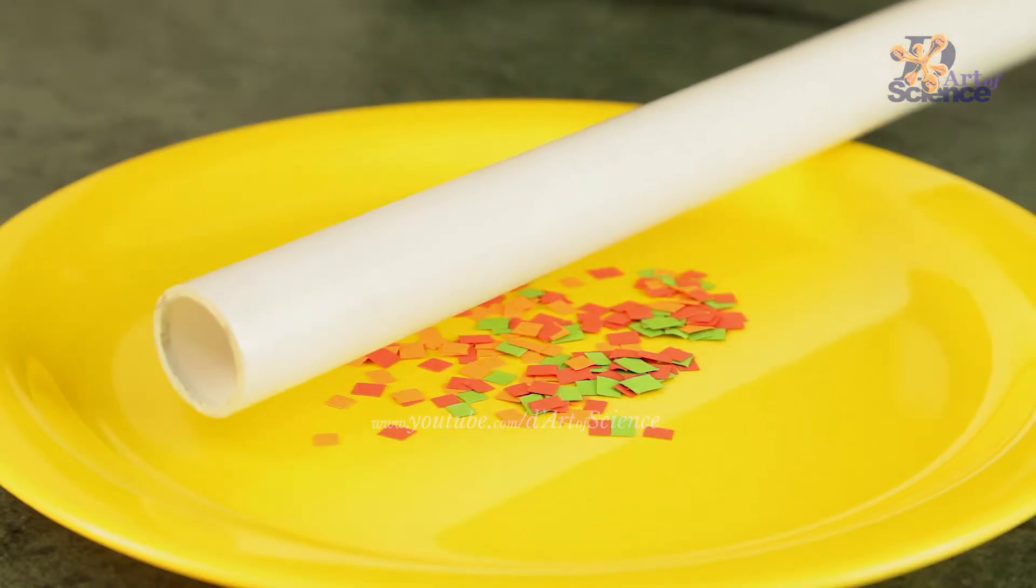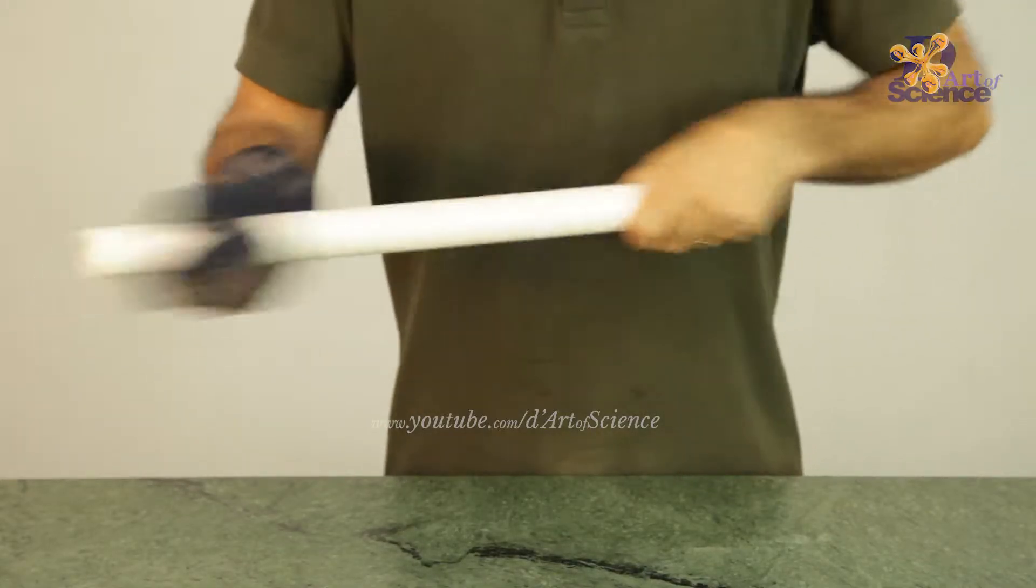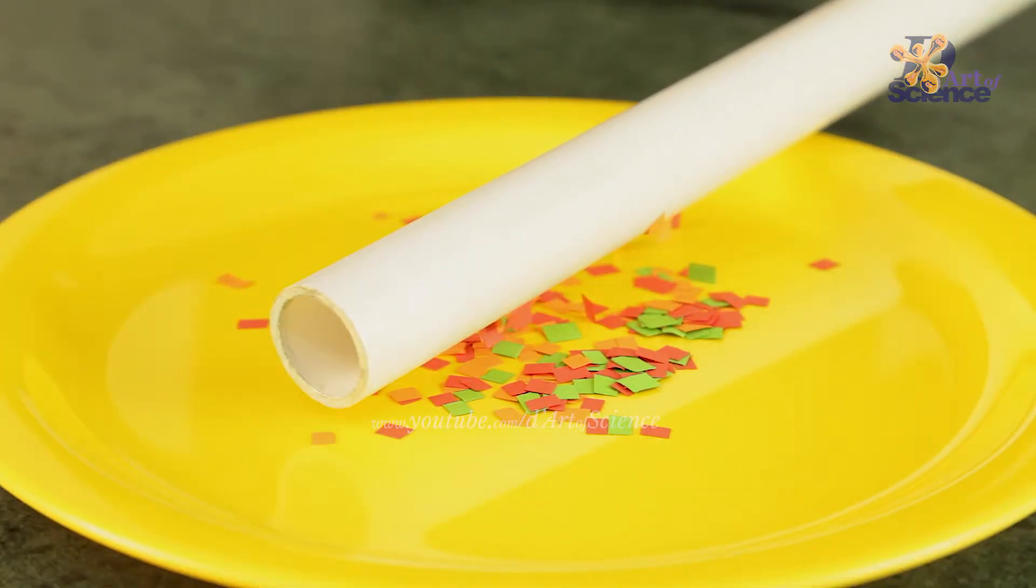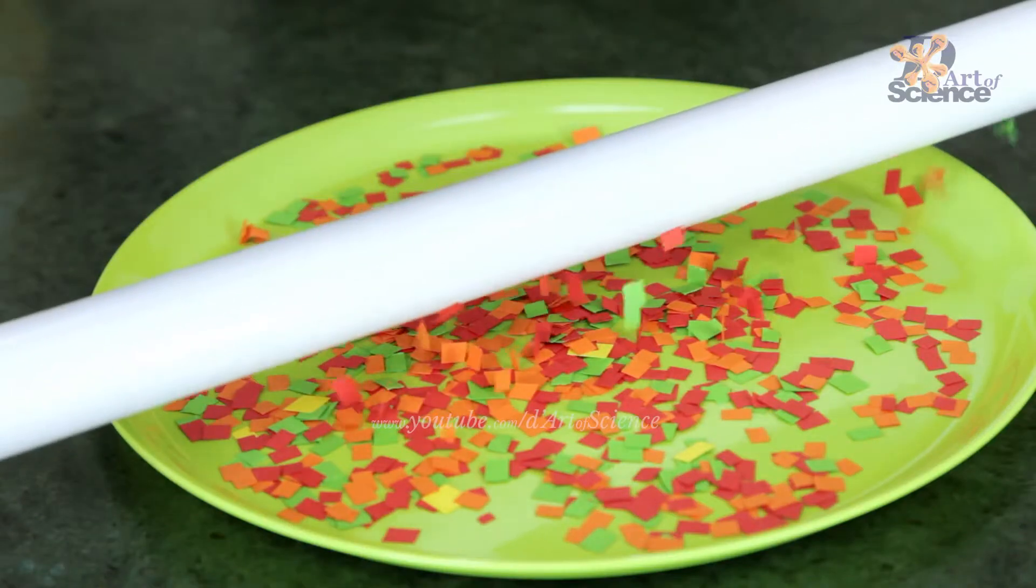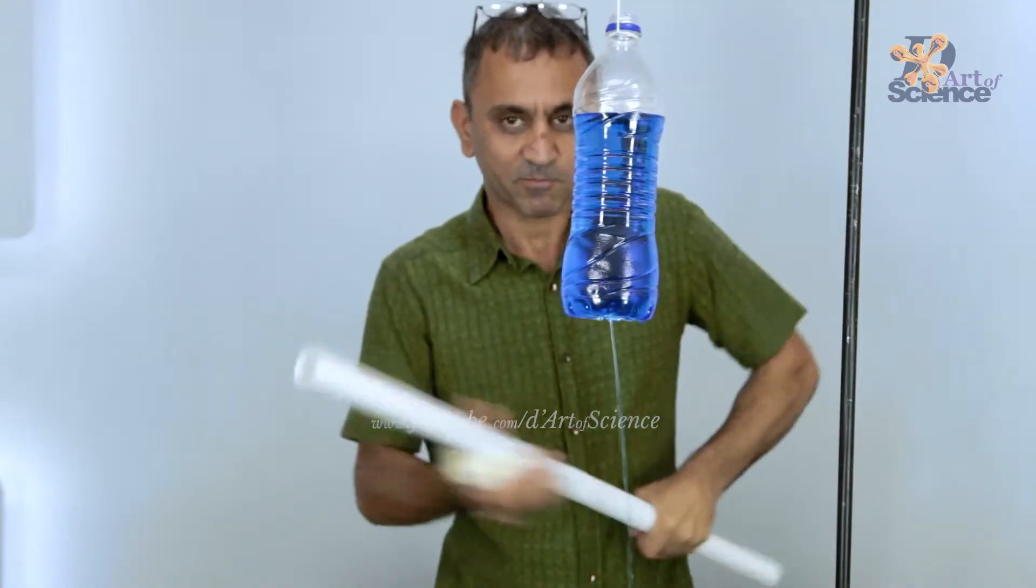This PVC rod is not charged and you can see it is not attracting the paper. But you can charge it by rubbing it on a woolen sock and then it starts attracting paper, and even a stream of water.